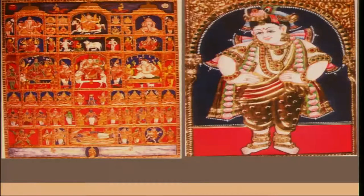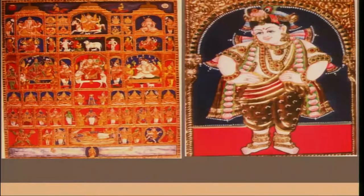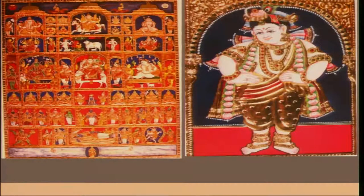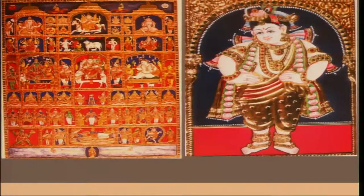The Tanjore school flourished under the royal patronage of the Maratha kings of Tanjore, which is in itself a historical incident, and reached its pinnacle during the rule of Sarfoji Maharaj, a great patron for Tanjore painting. Later, it fell on bad days during which the workmanship suffered. Tanjore — the name of Tanjavur — is about 300 kilometers from Chennai and was a capital of the Chola kingdom, which made significant contributions to Indian art and architecture.